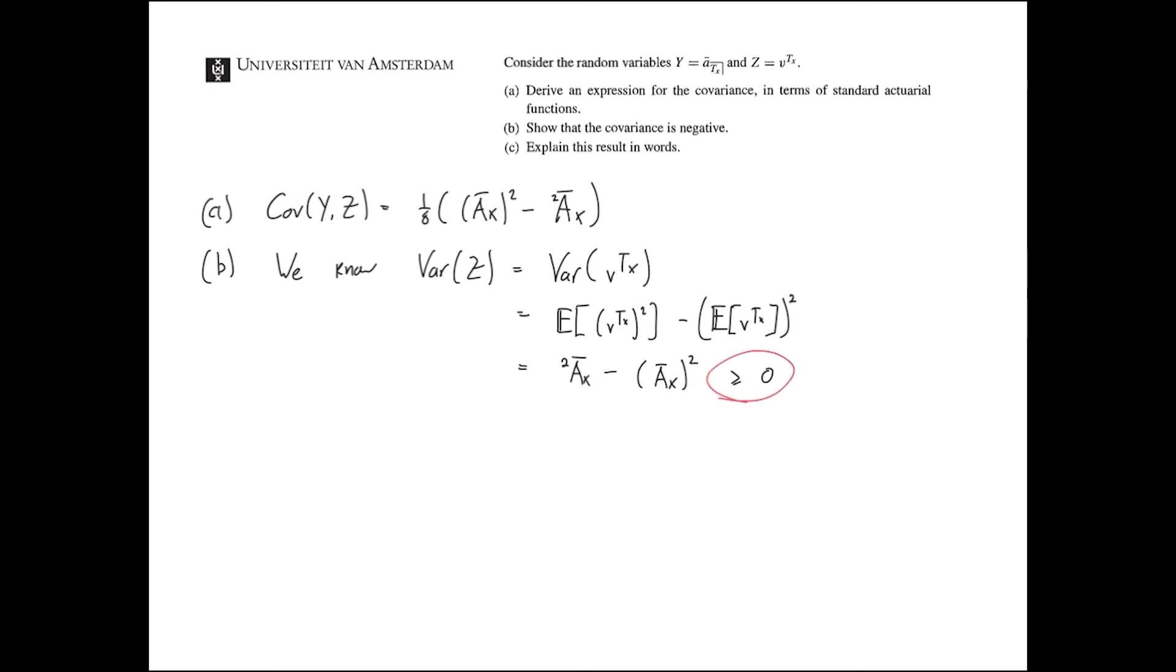then we know from part A that, then if we switch these two, so if we have A x, if we have the first moment squared, and we subtract the second moment, then, then of course, this must be negative, because it's just flipped. And this is the answer to part B.